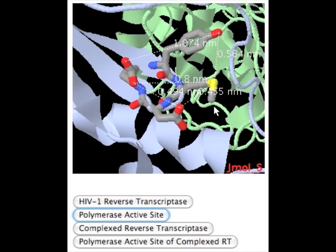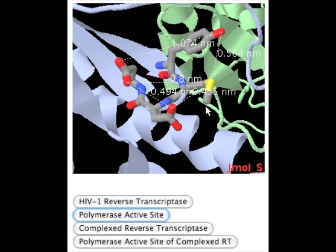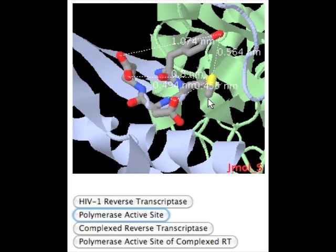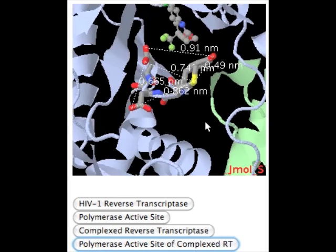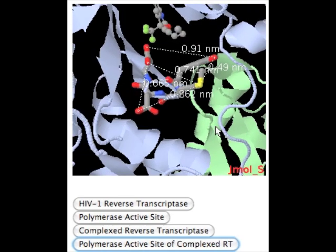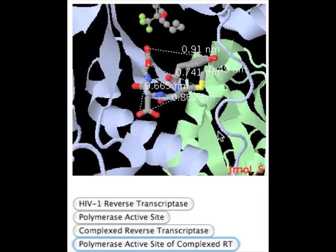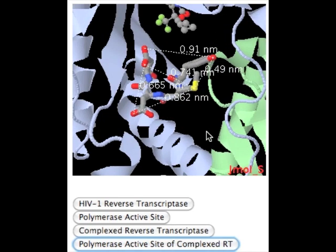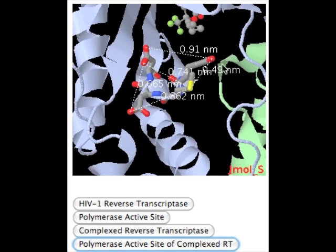The binding of efavirenz to the NNRTI binding pocket changes the precise geometry of a highly conserved string of four amino acid residues shown here. These residues play a role in the polymerase and nucleotide primer binding functions of the reverse transcriptase. After the inhibitor has bound, a number of these amino acids, most notably tyrosine-183 and aspartate-185, have rotated, which increases the distance between the selected atoms. This conformational change affects the ability of the polymerase region to properly grip the primer and initiate polymerization of double-stranded DNA.